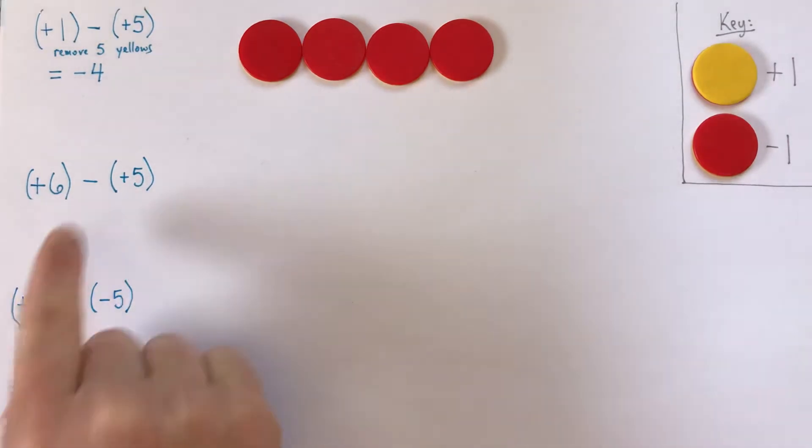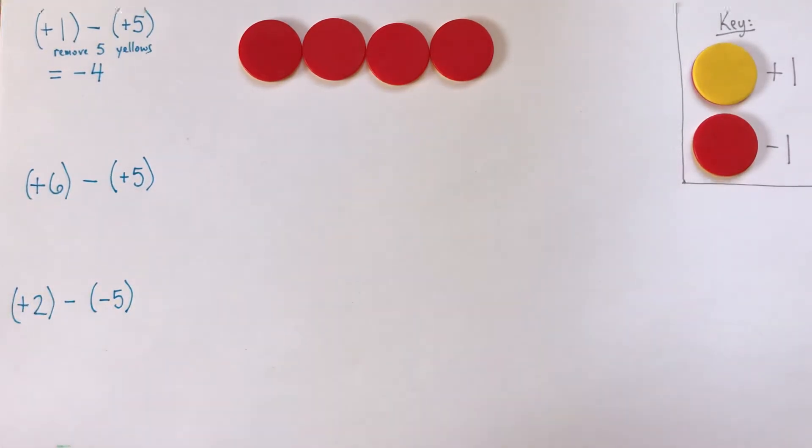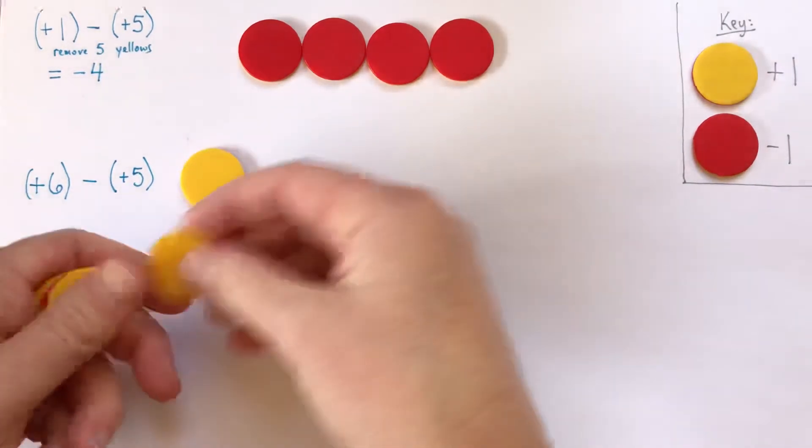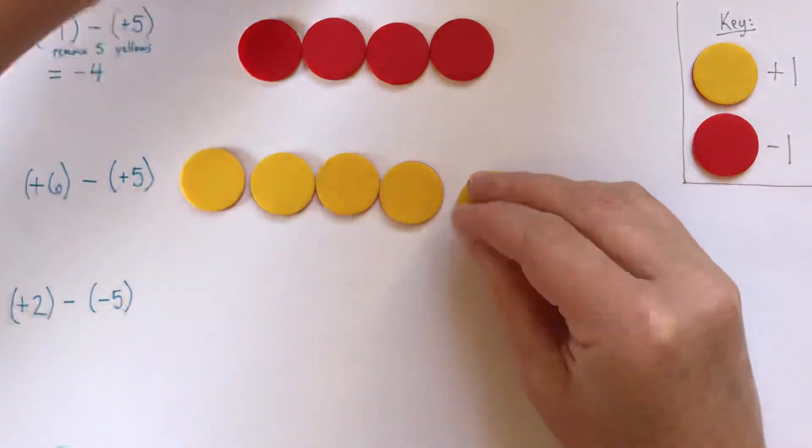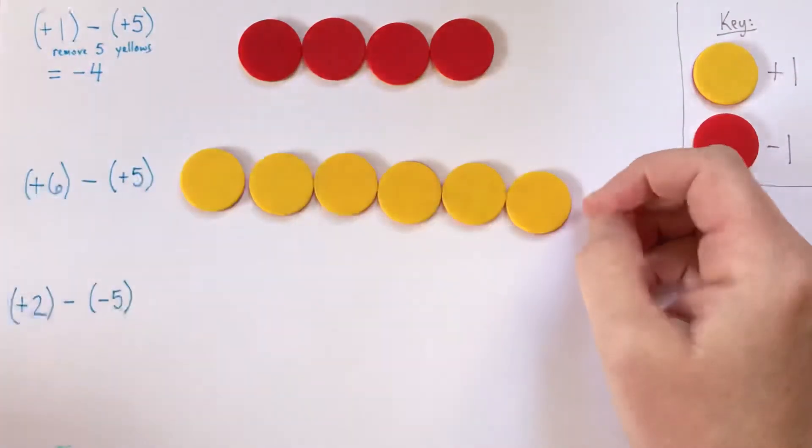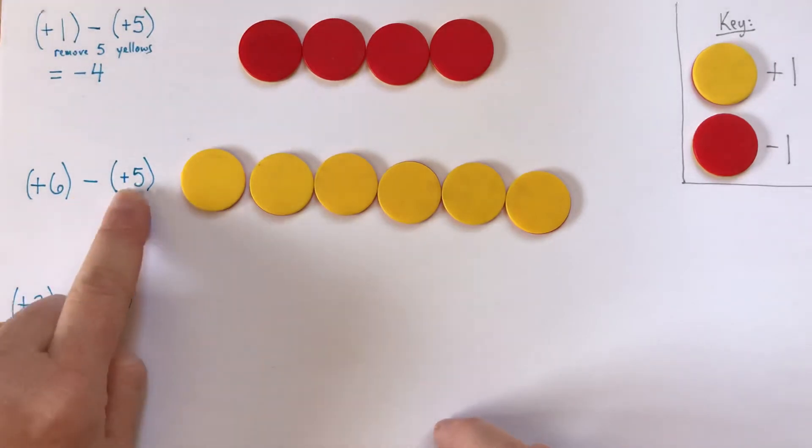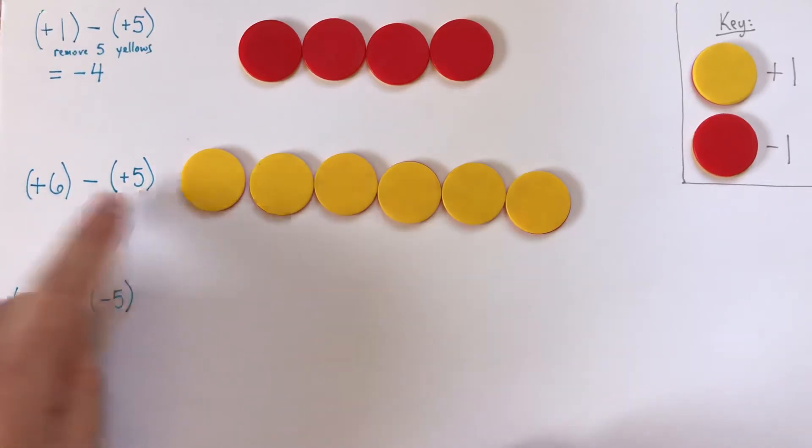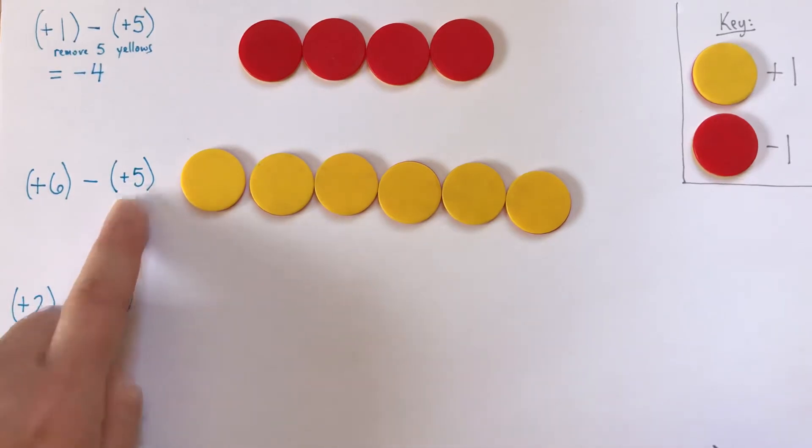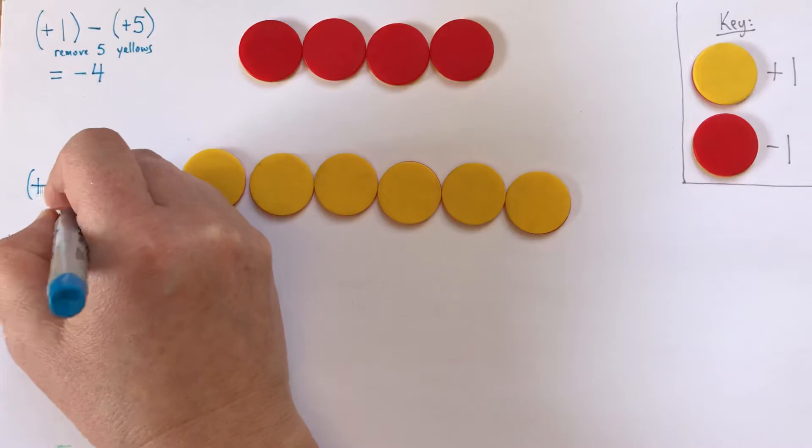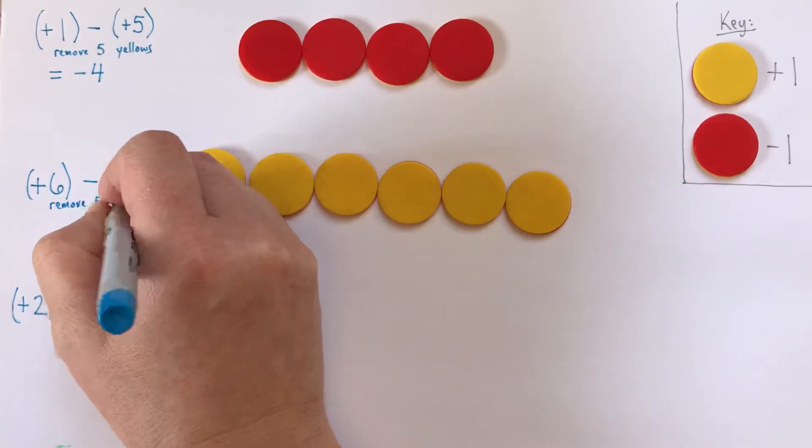Okay, on to the next one. Positive 6. 6 yellows. And I want to remove positive 5. If you take a second look at this, you may have noticed it right away. A lot of times people don't when they're in the middle of doing higher subtraction questions. This is just a 6 take away 5. This is sort of a grade 1 math question. But when you're in the middle of doing a bunch of integer questions, you don't always notice that. I've got 6 yellows. I want to remove 5 yellows. If you like, you can write that down.